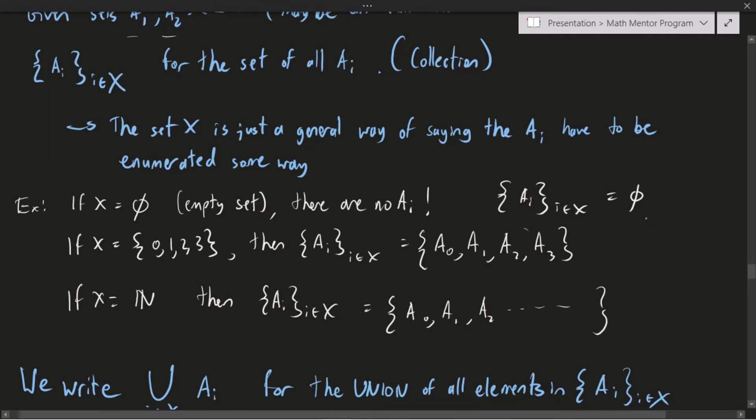Aside from this trivial example, we have finite cases. So if X is the set 0, 1, 2, 3, then the collection of Ai for i in X is the set containing A0, A1, A2, and A3. Notice that they contain the sets, not the elements in the sets. That's going to be a really important point later on. And finally, if our set is infinite, for example, if our set is the naturals, then the collection is going to be enumerated by the naturals. So I here have A0, A1, A2, and it doesn't end because the naturals don't end themselves.